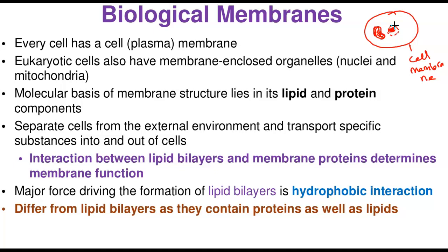The basic function of the cell membrane is that it separates cells from the external environment and helps in the transport of substances in and out of the cell. The cell membrane is what we call a selectively permeable membrane, which allows certain substances to pass while refusing others. The interaction between the lipid bilayer and membrane proteins determines the type of function — either acting as a receptor or as a transport protein.